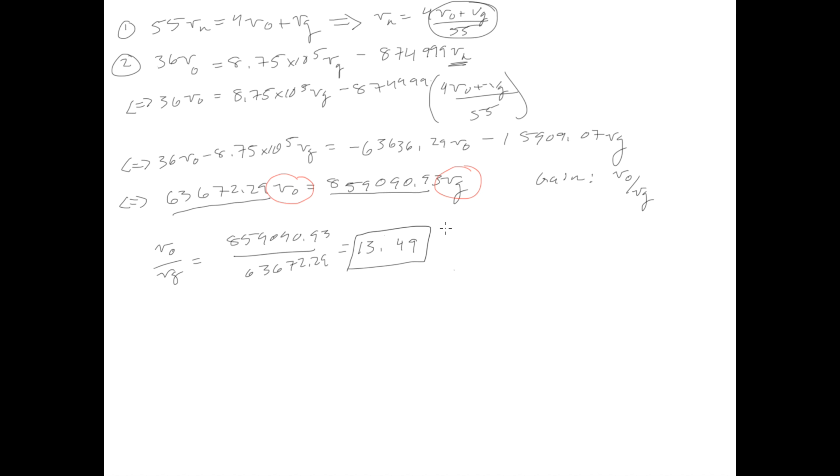This is the gain. So that was part A of the question, to find the gain. And part B is actually really simple. Now we actually have the gain, all part B was asking us to do is to find Vn and Vp if Vg is equal to 1 volt.